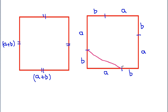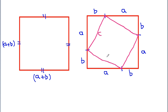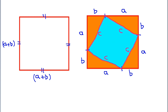This is the first triangle, this is the second triangle, this is the third triangle, and this is the fourth triangle. Each triangle has base a and height b, so the hypotenuse will be c. So we have four triangles — one, two, three, and four — and a square in the middle.